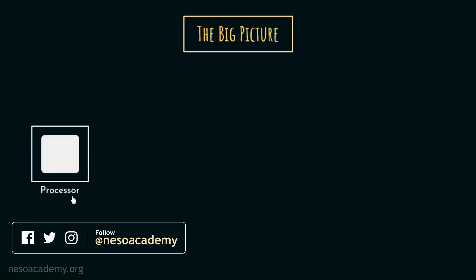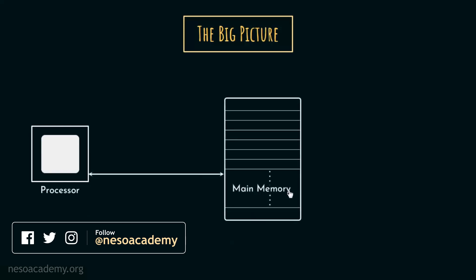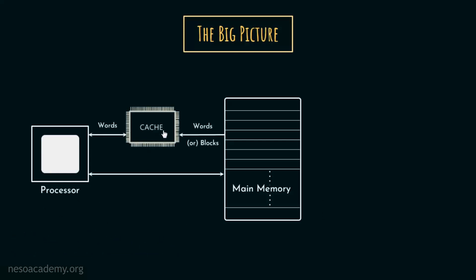Let's reconsider the big picture that we observed previously in the session introduction to memory. There we learned that within the processor we have the registers, but they were incapable of storing even a single instruction. So we opted for the main memory. Although it resolved the capacity crisis, it wasn't fast enough to cope up with the processor. So we came up with the cache memory to store the frequently used data.